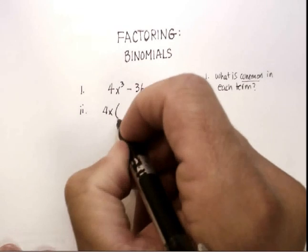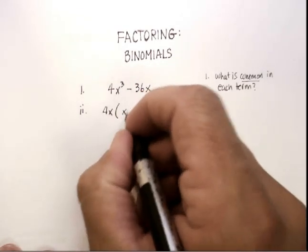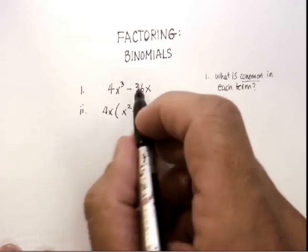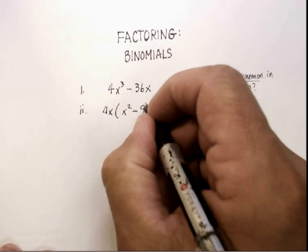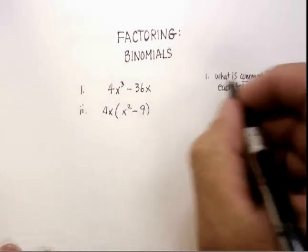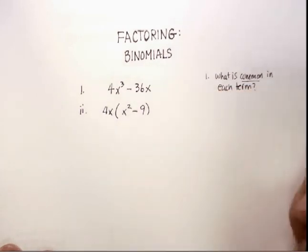That's going to leave you with just x squared minus—and 4x goes into 36x nine times. So again, always check and see what is common in each term. What are the common factors in each term?